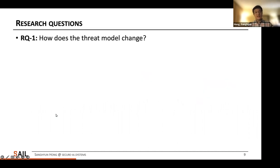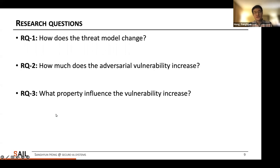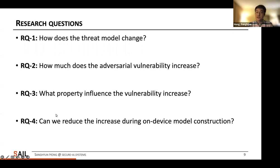In this study, we ask four research questions. First, how does the threat model change by releasing on-device models? How much does the adversarial vulnerability increase? What properties influence the vulnerability increase? And can we reduce the increase during on-device model construction? Let's start with the first question.